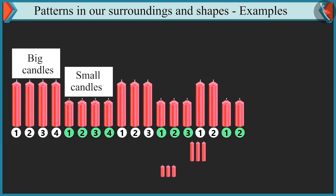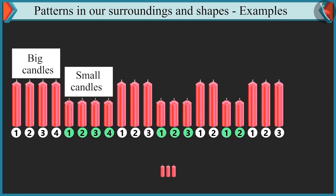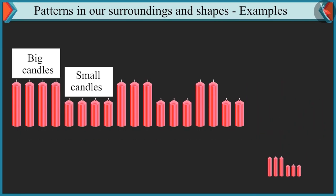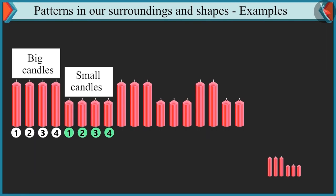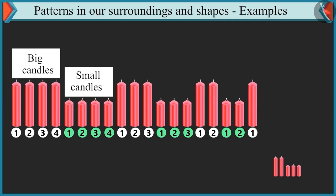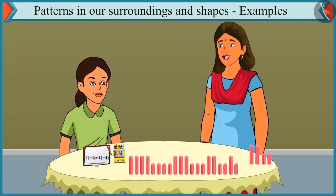It is easy. We have to place three big candles and three small candles after two candles. No, Chutki. Look carefully. Each time, the number of candles is decreased by one. Initially, we had four four candles. After that, three three candles and then two two candles. So this pattern will be complete if we place one big candle and one small candle beside it. Yes. Well done, Chutki.